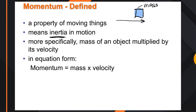Momentum is the property of moving things. If it's moving, it has inertia — it's in motion. So if we have a mass moving with a specific velocity, we can figure out how much momentum this object has with a simple formula: momentum equals mass times velocity.